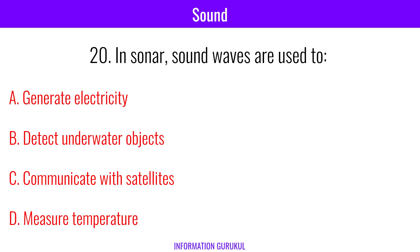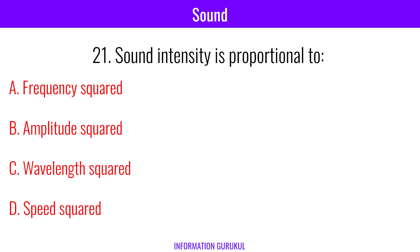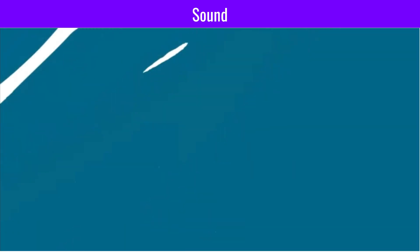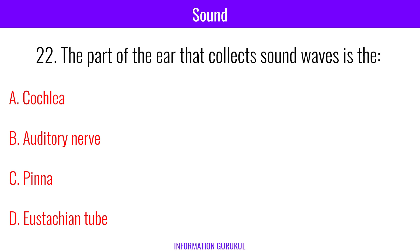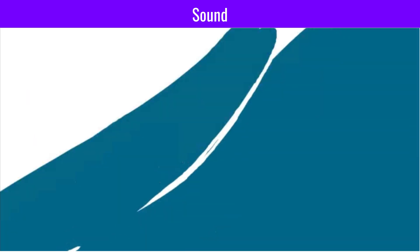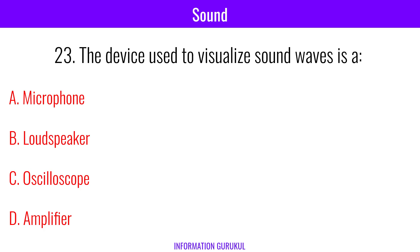In sonar, sound waves are used to detect underwater objects. Sound intensity is proportional to amplitude squared. The part of the ear that collects sound waves is the pinna. The device used to visualize sound waves is an oscilloscope.